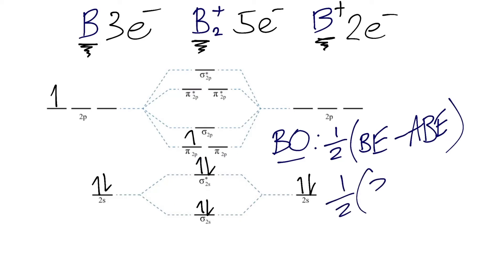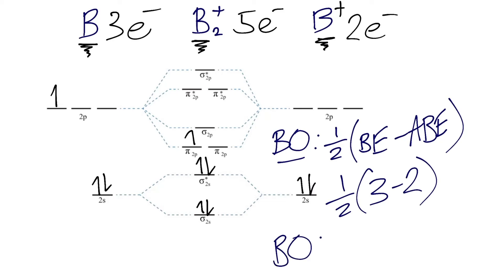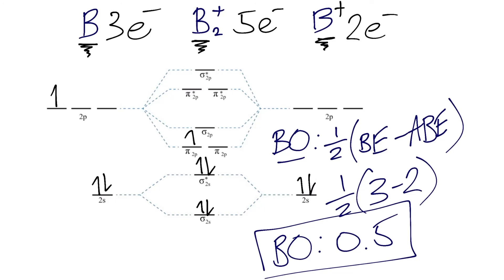So we have one half times three bonding electrons minus the antibonding electrons. The π antibonding orbitals are empty so we ignore those, but the σ2s* antibonding molecular orbital has two electrons, so we subtract two. The bond order equals one half times one, or 0.5. A bond order of one corresponds to a single bond and two to a double bond, so a bond order of 0.5 means B2+ has about half the strength of a single bond.